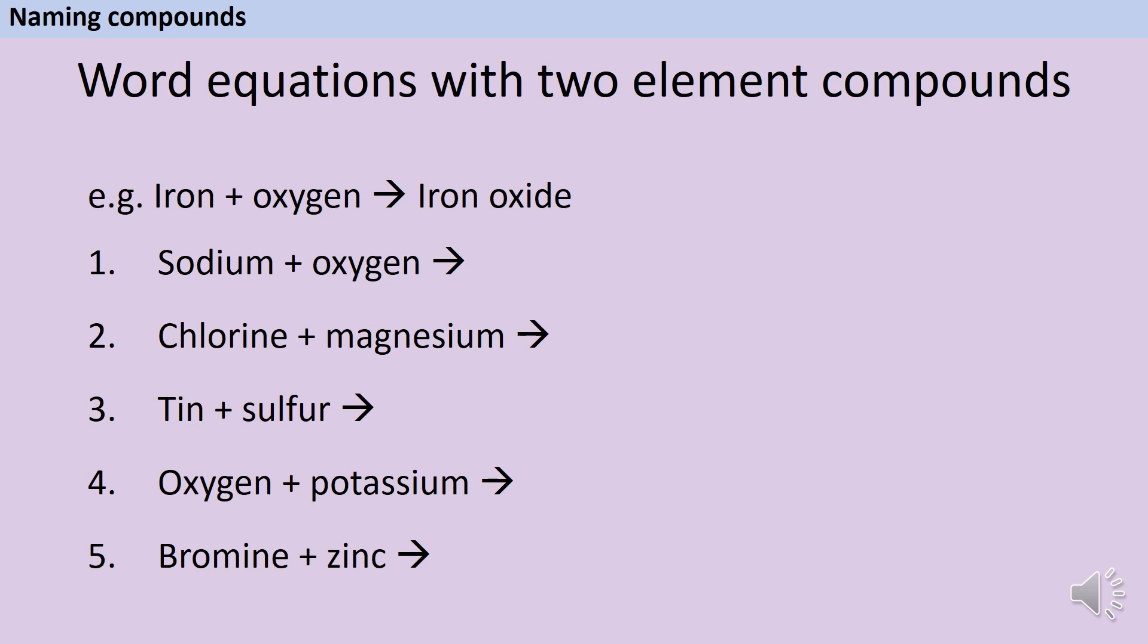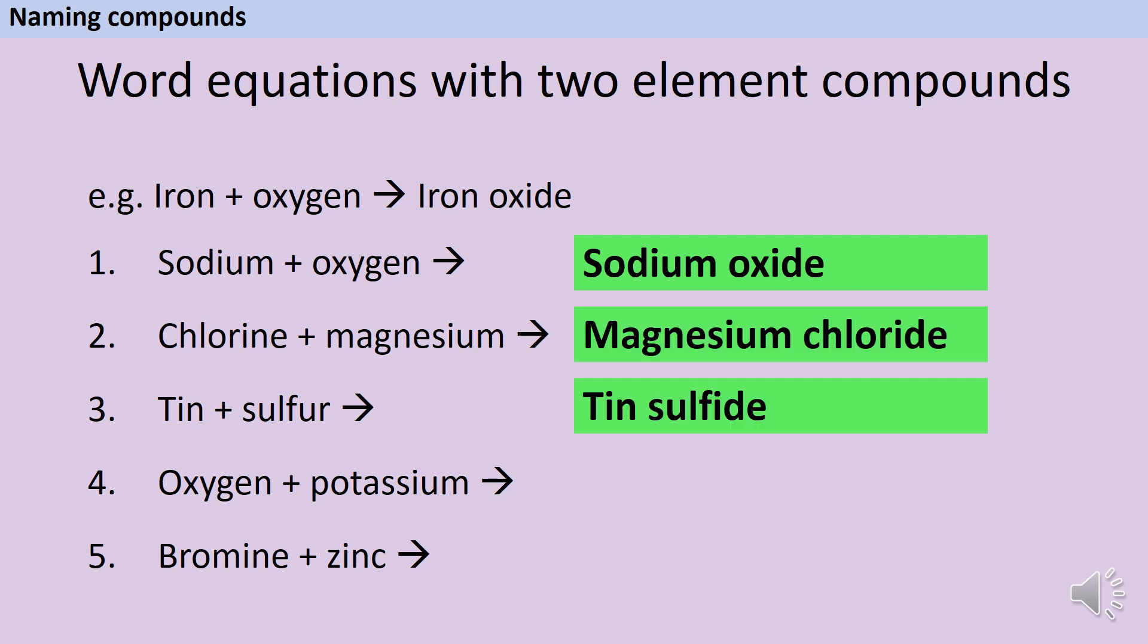Sodium reacts with oxygen. Sodium is the metal, so that goes first. And oxygen, we're going to take just the ox and put ide on the end. So we get sodium oxide. The second question is a little bit trickier, because I've switched around the metal and the non-metal. Magnesium is on the left of the periodic table, so you know it's a metal, so that comes first. And we make magnesium chloride. Then we get tin sulphide, potassium oxide, and zinc bromide.